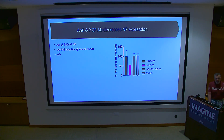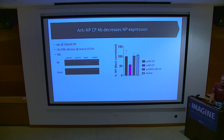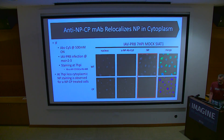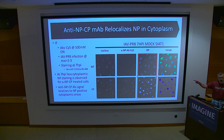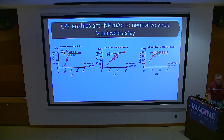In a functional experiment, taking this cell-penetrating antibody at 500 nanomolar overnight, infecting cells with PR8 at low multiplicity, and measuring nucleoprotein by western blot — we see a 50% reduction in nucleoprotein expression. In immunofluorescence, you can see antibody co-localizing with nucleoprotein that's not in the nucleus where it should be at that time in infection, but in the cytoplasm.